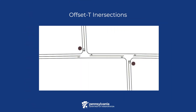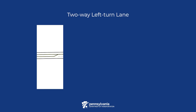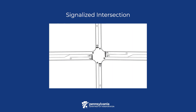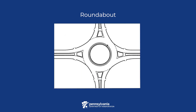Offset T-intersections are common in rural Pennsylvania, where roads are often not laid out in a grid. As population and traffic volume grow, safety issues can sometimes develop at these locations. Common improvements include adding left-turn lanes on the major street and creating a three-lane section between the intersections, realigning the minor roads into a single four-leg intersection with a traffic signal, or realigning the minor roads into a single four-leg intersection with a roundabout. Let's learn about how to perform a safety analysis of these alternatives.